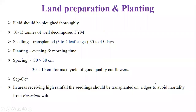Land preparation and transplanting: The field should be ploughed thoroughly. Apply 10 to 15 tons of well-decomposed FYM. Seedlings are transplanted at 3 to 4 leaf stage. Planting is done in the evening or morning time. Spacing is 30 by 30 cm or 30 by 15 cm for good quality cut flowers. Planting season is September-October. In areas receiving higher rainfall, seedlings should be transplanted on ridges to avoid mortality from Fusarium wilt.